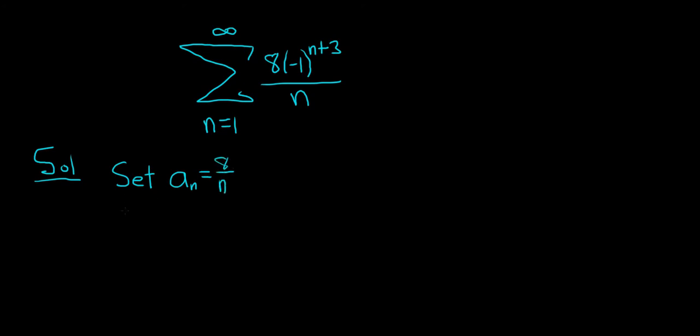Then you just have to go through the motions of verifying the two steps. The first step is to take the limit as n goes to infinity of your a sub n. In this case, the limit is 0 because as n gets really big, 8 over n gets smaller and smaller.